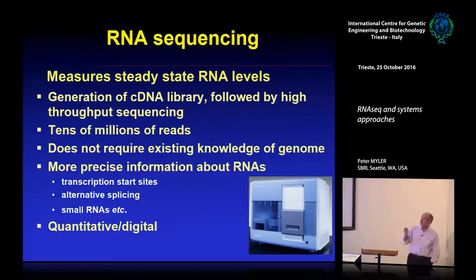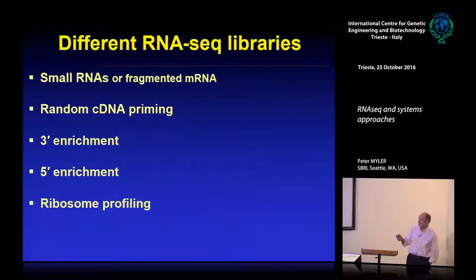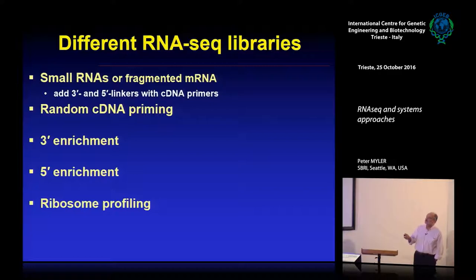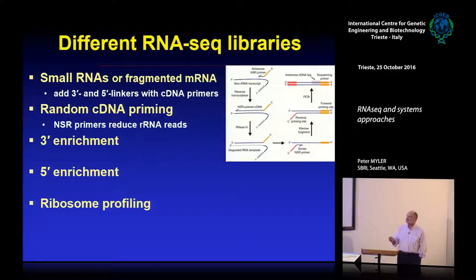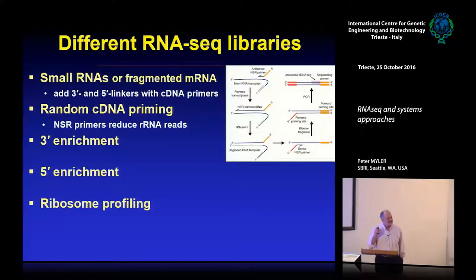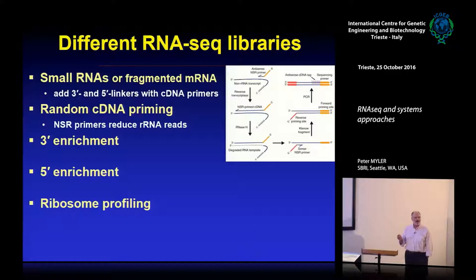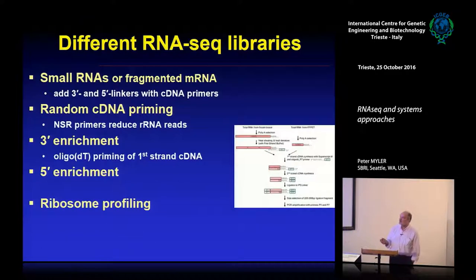There are five types of RNA-seq libraries. You can make libraries from small RNAs or fragmented RNAs by adding linkers on the 5' and 3' ends and using them to make cDNAs. The problem is bias from the ligation step. With random cDNA priming, you must get rid of ribosomal RNA first, otherwise that's mostly what you'll get back. So-called 'not-so-random' primase techniques to reduce this didn't work well in my experience, so we generally do a poly-A selection step.